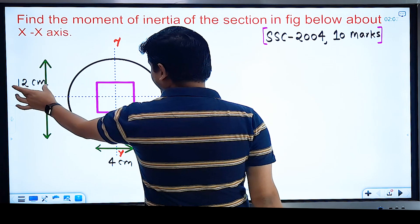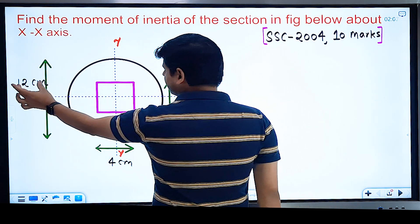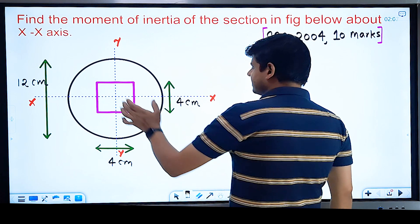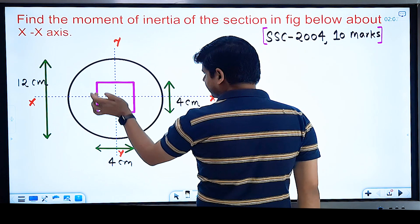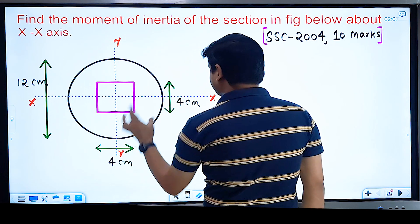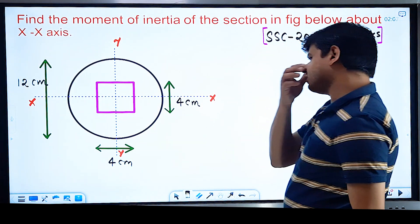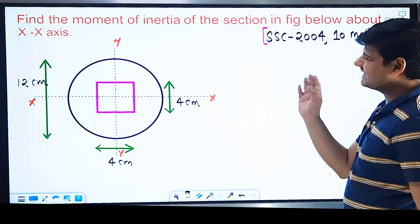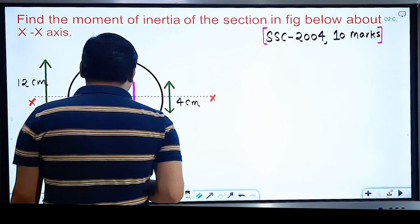The circle has a diameter of 12 cm. Inside this circle, a square portion has been cut out. The square has dimensions 4 cm × 4 cm. The section is symmetrical about both the x-axis and y-axis.